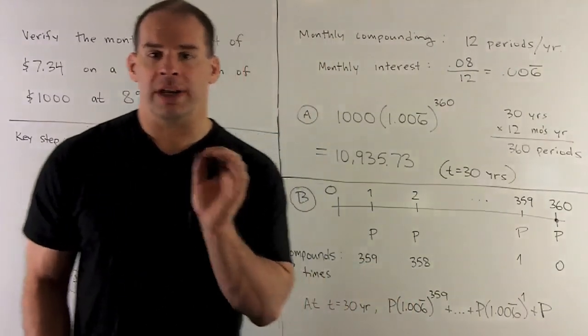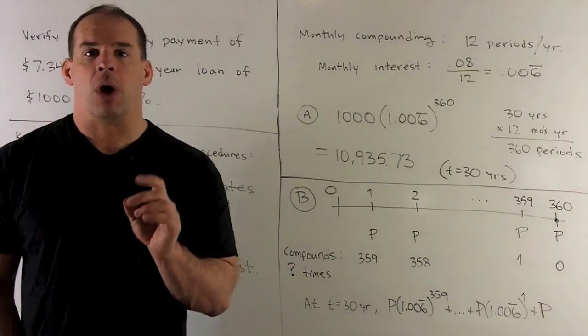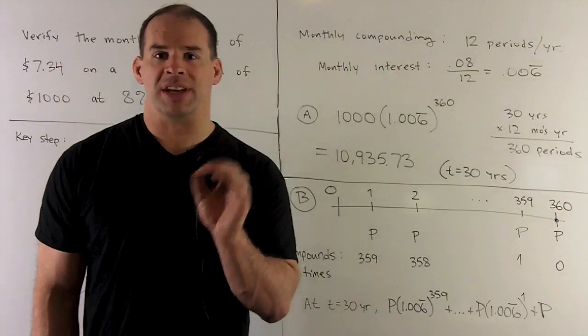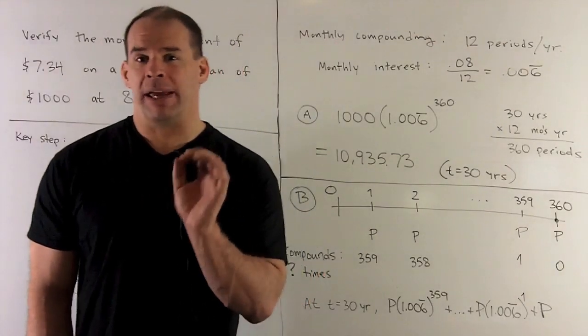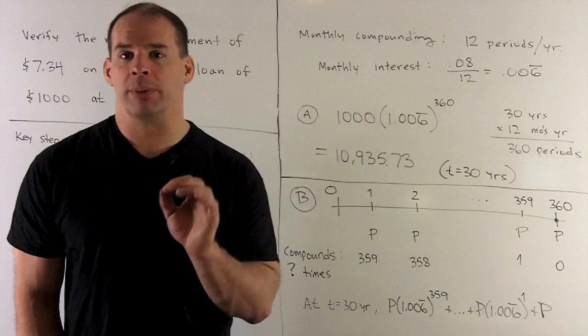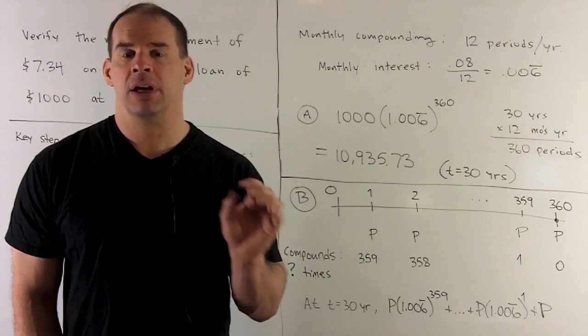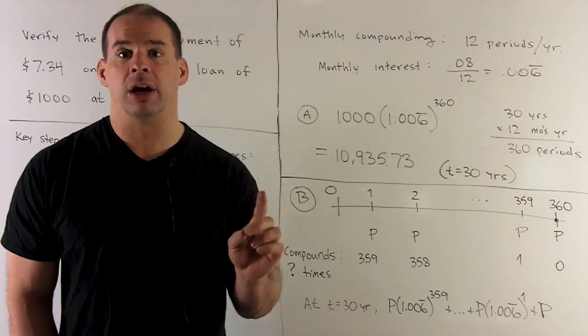Now, what interest do we charge? So our 8% we're going to assume is a nominal annual rate. So if we're making payments every month, we're going to assume that we're compounding monthly. So we're going to have 12 compounding periods in a year.